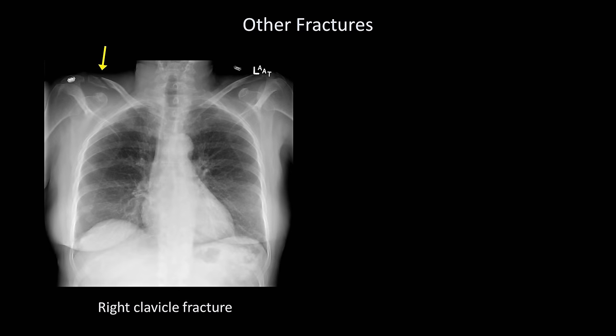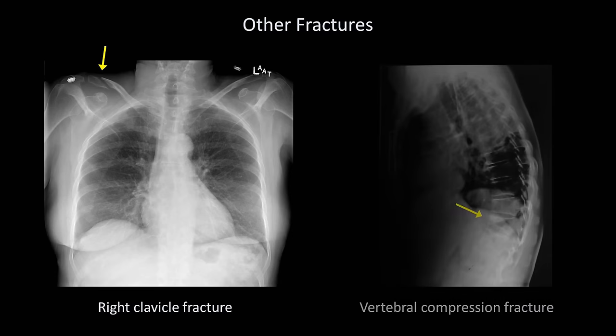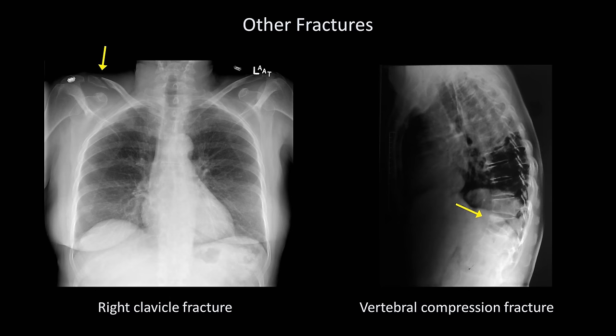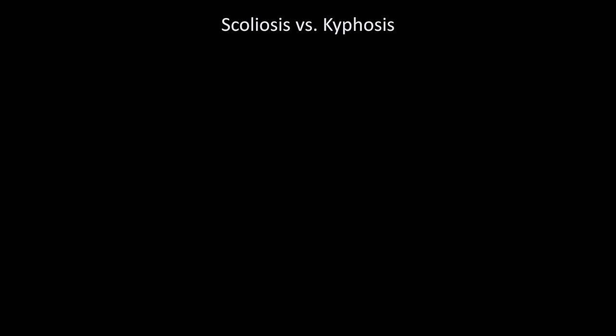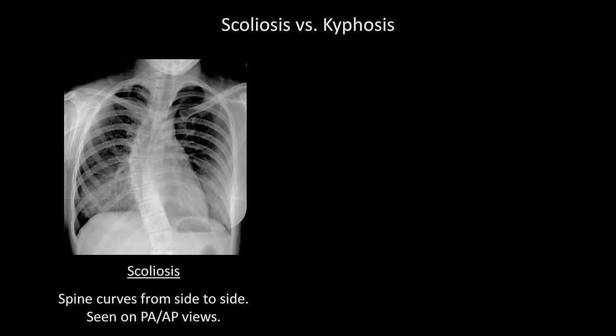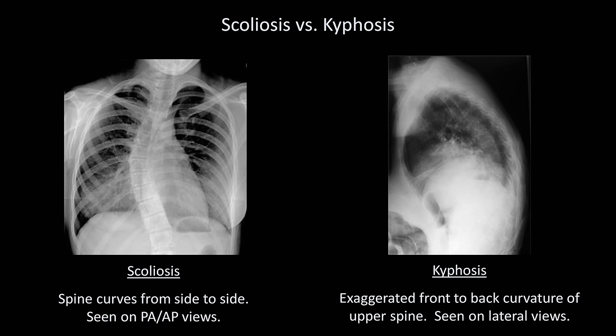A number of other fractures can be seen on chest x-ray. Although it is not the optimal view for identifying or categorizing them, clavicular fractures can be seen. And on the lateral film, we can identify vertebral compression fractures. Next, the difference between scoliosis and kyphosis: in scoliosis, the spine curves from side to side, visible on PA and AP views; in kyphosis, there is an exaggerated front-to-back curvature of the upper spine, usually only visible on lateral views.